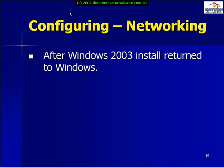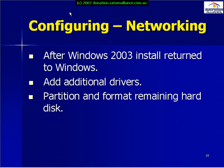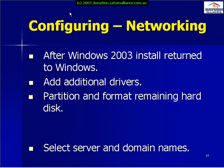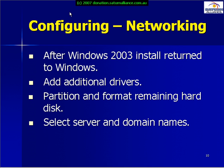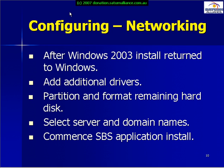Once we finish this process, we return to Windows 2003. We can then add additional drivers for things like network cards and video screens. We partition and format the remaining hard disk space, select a server and domain name, and commence the SBS application installation.